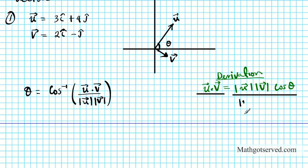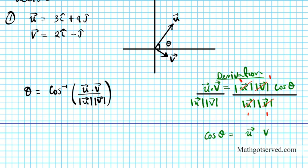The magnitude of vector u and v are scalar quantities, so we're just dividing by a number. We divide by the magnitude of u and the magnitude of v on both sides. On the right side, these cancel out to 1. Using the reflexive property of equality, we get cosine theta equals vector u dotted with v, divided by the magnitude of vector u multiplied by the magnitude of vector v.